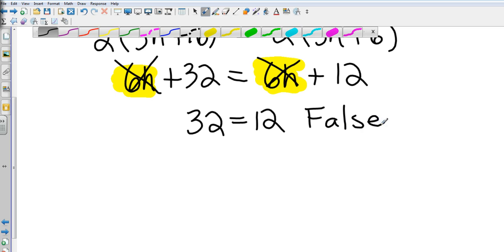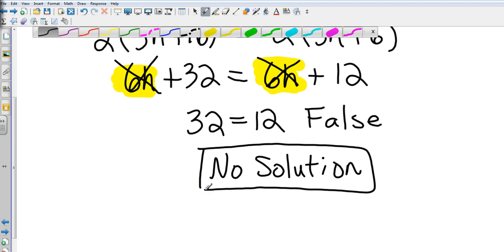So my answer in this case is actually no solution. Remember that if the numbers actually do equal each other—for example, if that was 32 equals 32—then my answer would be all real numbers. But in this case it is false. So that's Chapter 1 Section 5: Equations. Got about 7 minutes worth there, and that is it.